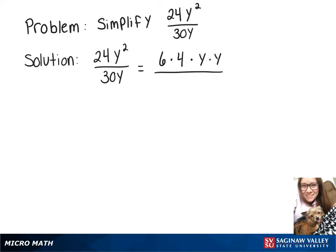On the bottom, 6 goes into 30 five times, so I can rewrite 30 as 6 times 5 times y.